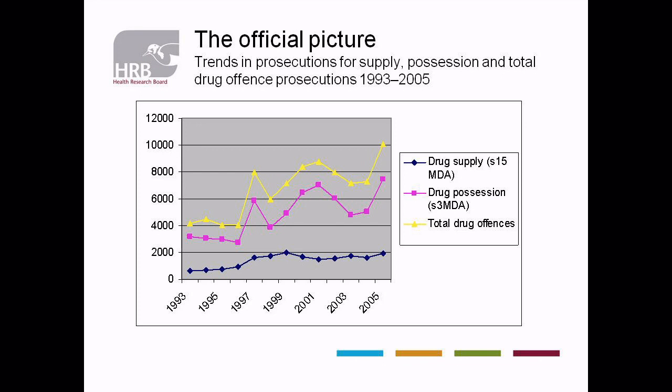If you follow the yellow line, that's the total drug offences between 1993 and 2005. The pink line is for possession, and the blue line is for supply. So what that tells us immediately is that the main trend in drug offences is determined by possession offences — that is the bulk of the offences that are prosecuted through the courts. If you notice something interesting, in 1997 you see that the line jumps up very rapidly. I think that is because of the murder of Veronica Guerin in 1996, and what you saw was this major reaction by the state.